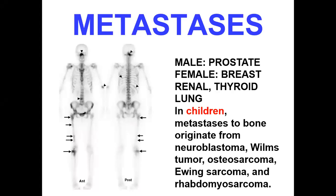You know that malignant tumors may metastasize to the liver, lungs, bones, and brain. Metastasis to the bones commonly arises from prostatic carcinoma in males. And in females, carcinoma of the breast is most common to metastasize to the bones. Then carcinoma of the kidneys — that is renal cell carcinoma — and thyroid carcinomas like follicular carcinoma or papillary carcinoma may metastasize to the bones.